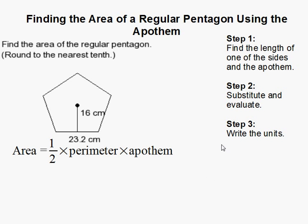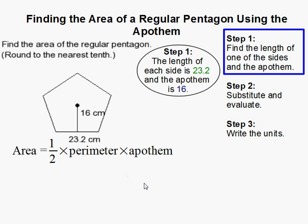How to find the area of a regular pentagon using the apothem. Alright, so the first thing we have to do is find the length of one of the sides, and we need to find the apothem.